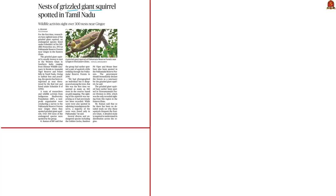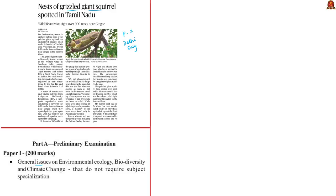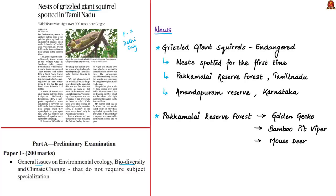This article titled 'Nests of Grizzled Giant Squirrels Spotted in Tamil Nadu' has appeared on page 7 in the Delhi edition only. The discussion is relevant in prelims under general issues on biodiversity. The nests of the Grizzled Giant Squirrel, an endangered species, have been spotted for the first time by researchers. More than 300 nests were spotted in the Pakkamalai Reserve Forest and in the Anantapuram reserve. The majority of the nests were found in Pakkamalai Reserve Forest, located in Villupuram district of Tamil Nadu. Researchers have requested the government to immediately declare these forests as a sanctuary for the Grizzled Giant Squirrel.